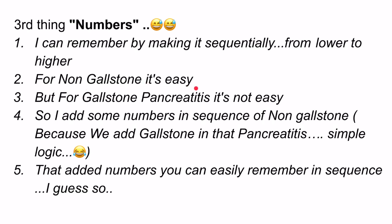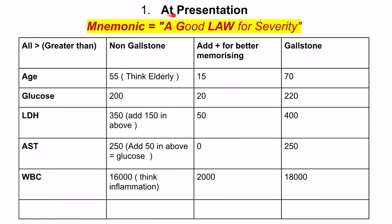For non-gallstone pancreatitis the numbers are easy, but for gallstone pancreatitis it's not easy to remember those numbers, so I add some numbers in sequence. At presentation, the mnemonic for Ranson's criteria is AGLAW: A for age, G for glucose, L for LDH, A for AST, and W for WBC. All numbers are greater than those included in the table.